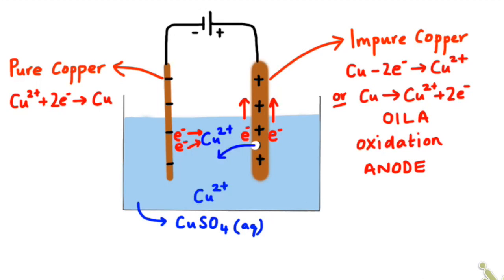So the two electrons will attach to the Cu2+ ion and that forms a pure copper atom, which will be deposited on the pure copper electrode. It's a gain of electrons and we know that reduction is gain. So reduction is taking place at the pure copper electrode and that makes it the cathode.